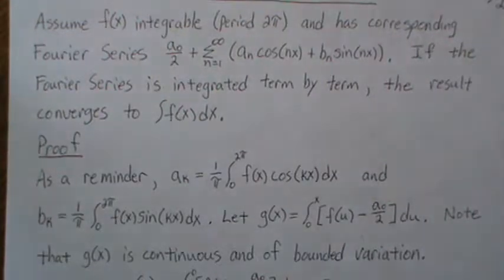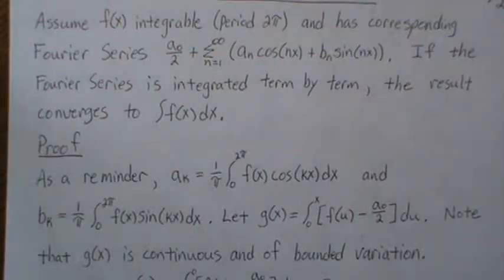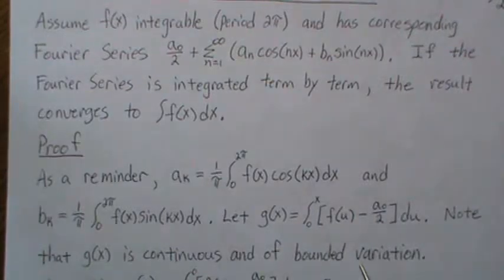Now bounded variation doesn't simply mean that there's some number that bounds it. Bounded variation also has to do with how many oscillations it has and how many wiggles.